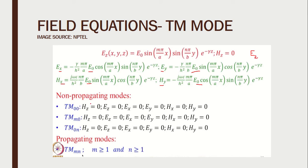We need to distinguish between non-propagating modes and propagating modes. A TM mode is represented as TM_MN. We are going to substitute various values for M and N to see what happens to the four field equations. First, let us take M equal to 0, N equal to 0. When we substitute M as 0, cos 0 becomes 1 but sin 0 becomes 0, so the total equation goes to 0.